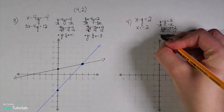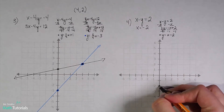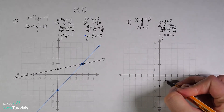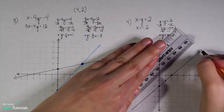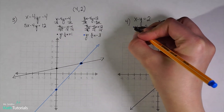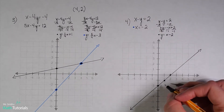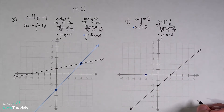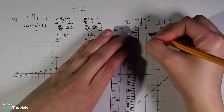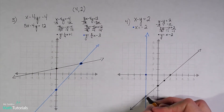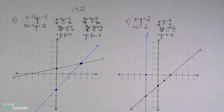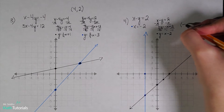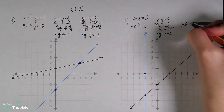I graph the first equation in black: y-intercept at negative 2, slope up 1, right 1. Then I graph x equals negative 2 in blue — I plot negative 2 on the x-axis and draw a vertical line. I can very easily see that these two lines cross at negative 2 on the x-axis and negative 4 on the y-axis. So the solution is the point negative 2, negative 4.